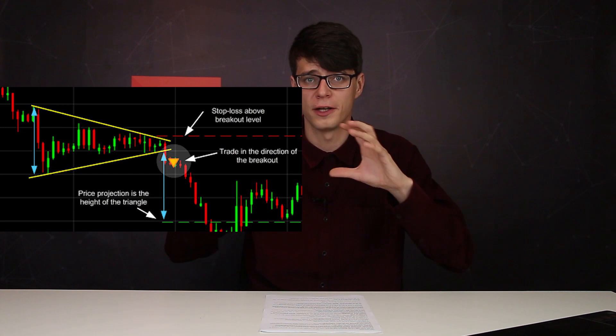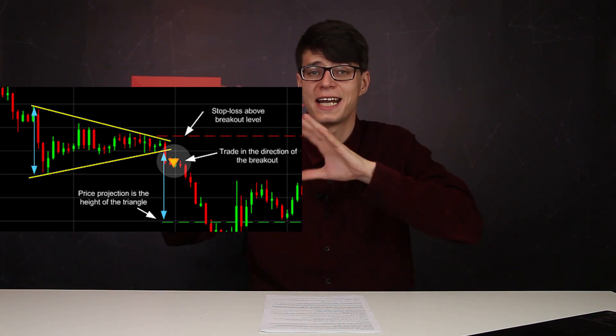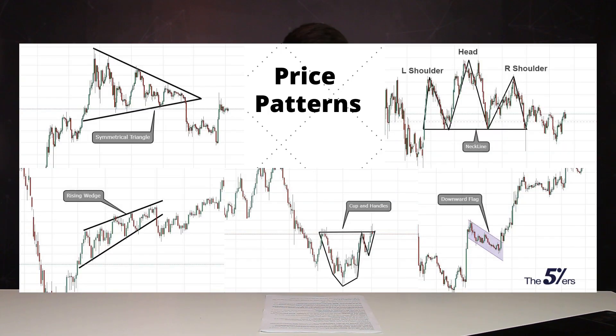The human brain is designed in such a way that it tries to find patterns and associations in everything. As a result, traders found patterns on absolutely chaotic movements of stocks in the form of triangles, head and shoulders, flags, wedges, etc. As in candlestick analysis, there are trend continuation patterns and reversal patterns.